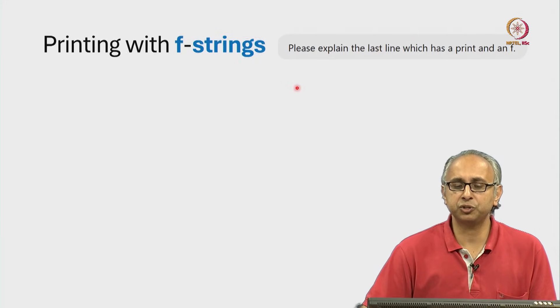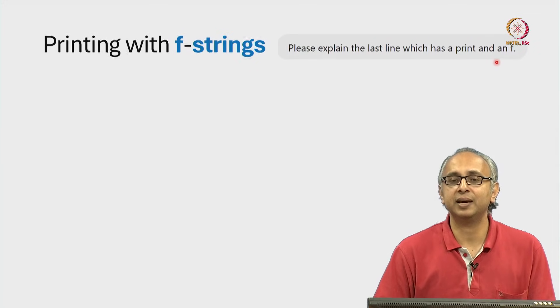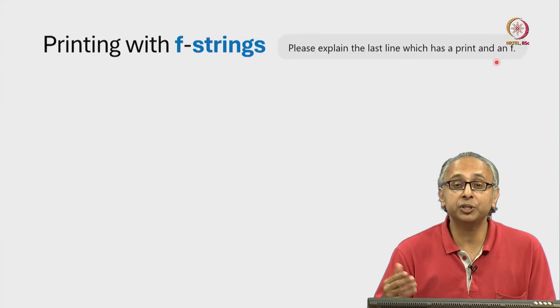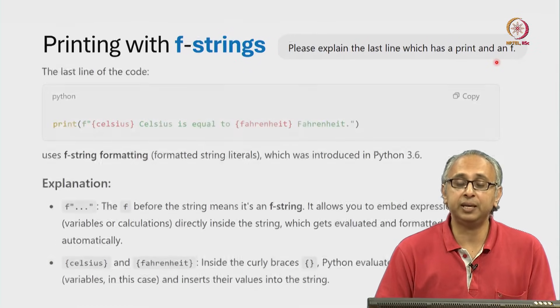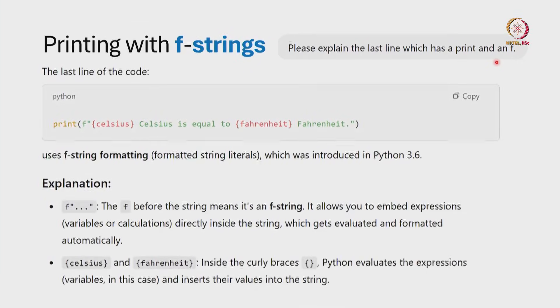Here is my question to ChatGPT, please explain that last line which has a print and an F. I am showing this to you because ChatGPT as part of its training has read all the Python documentation.